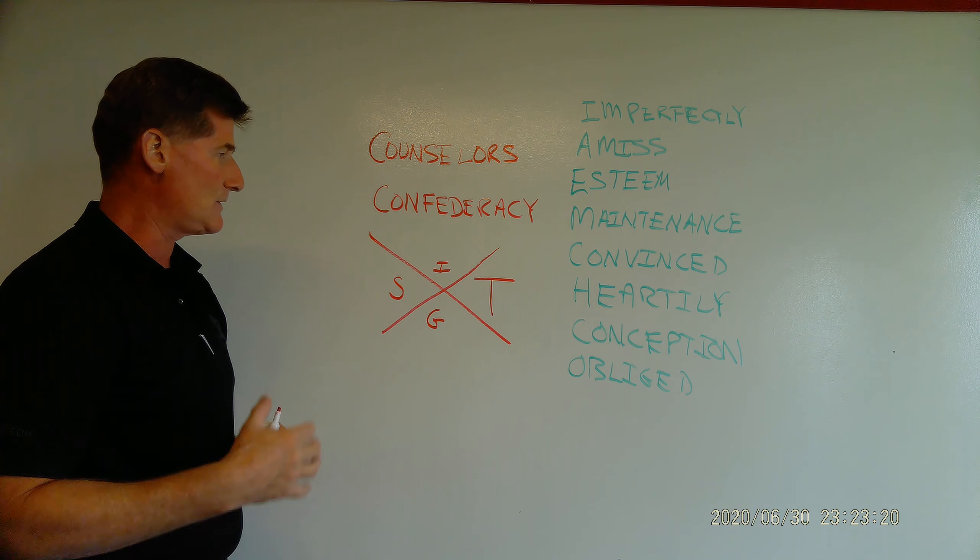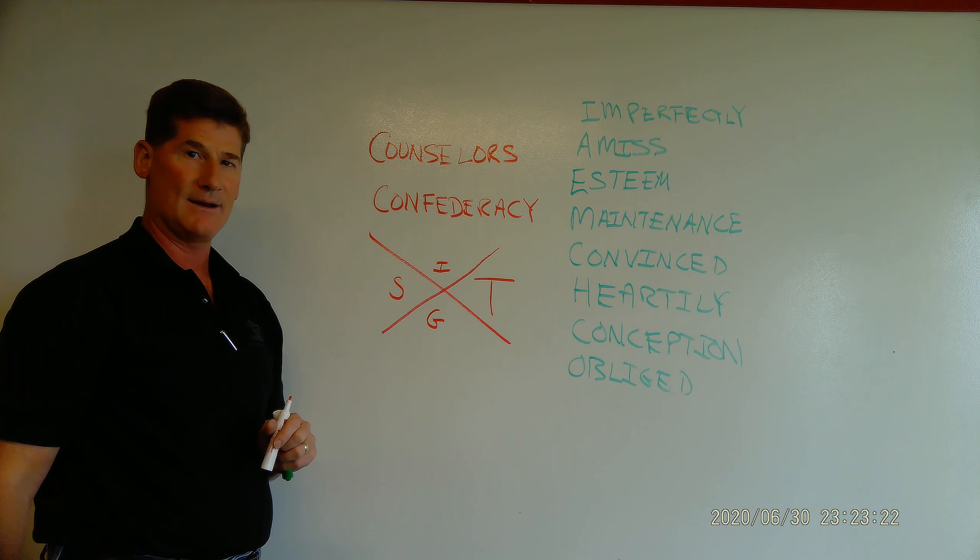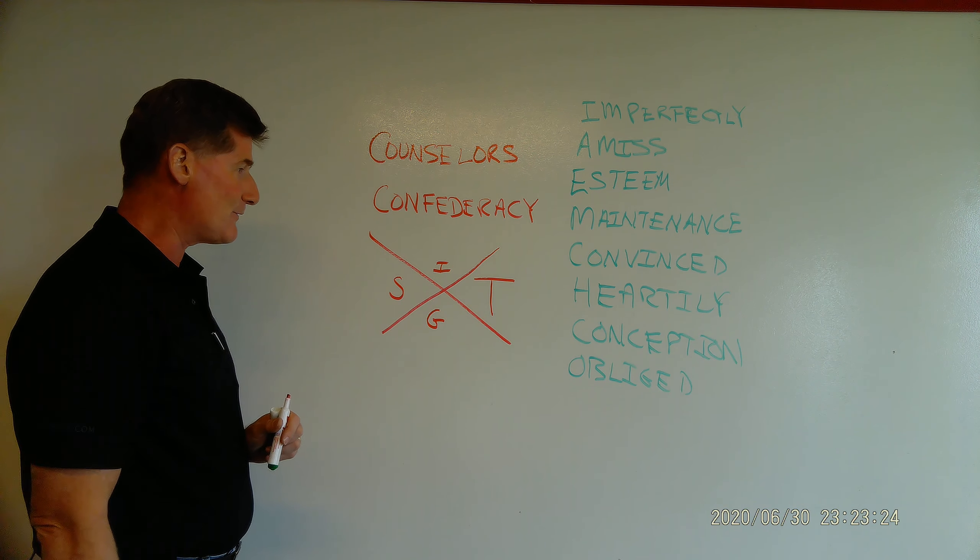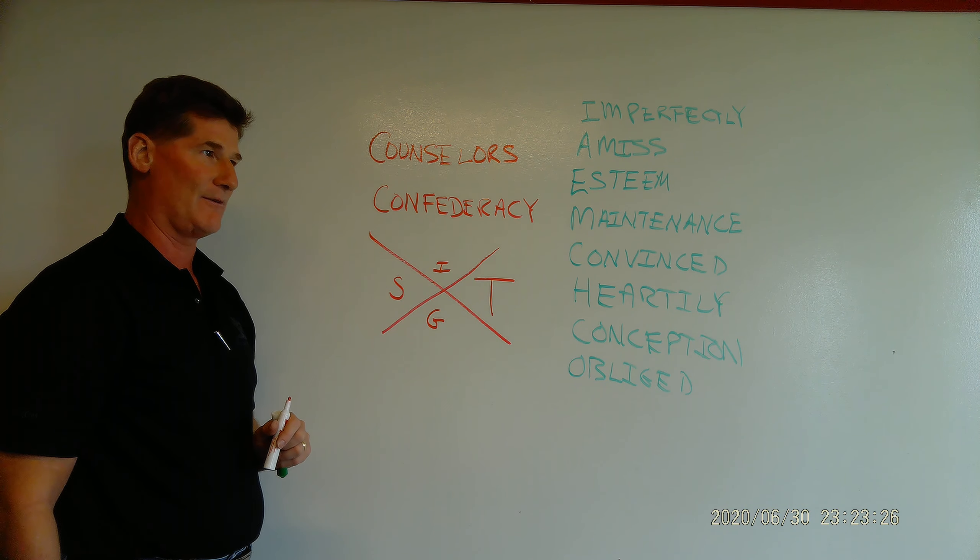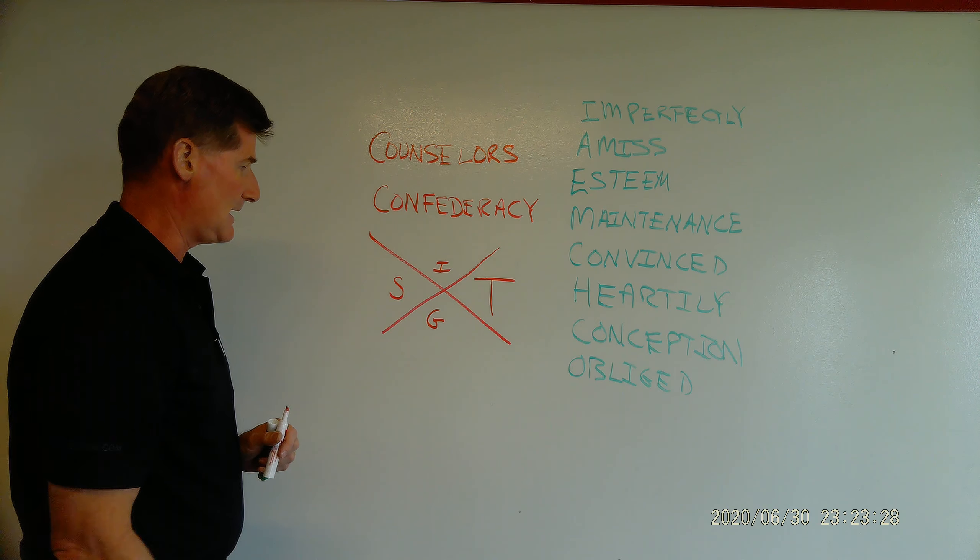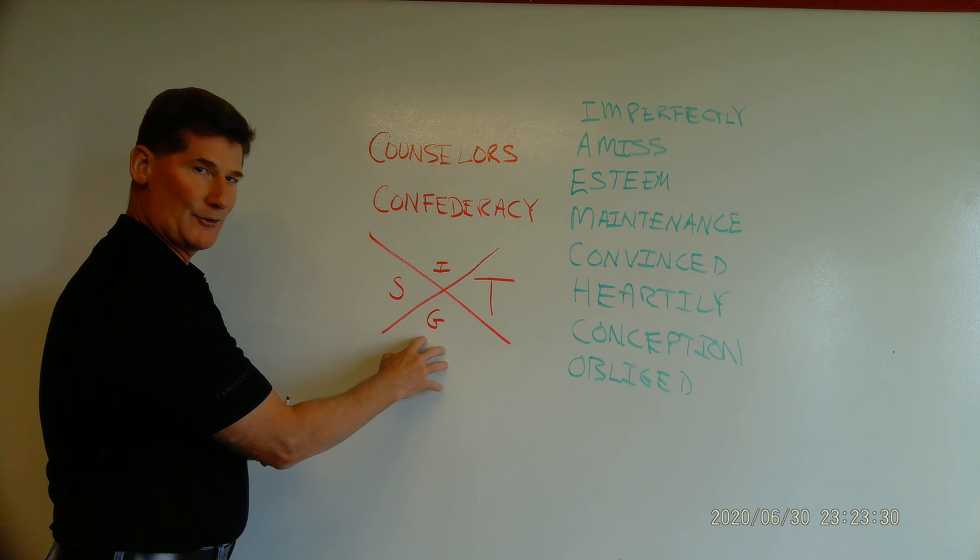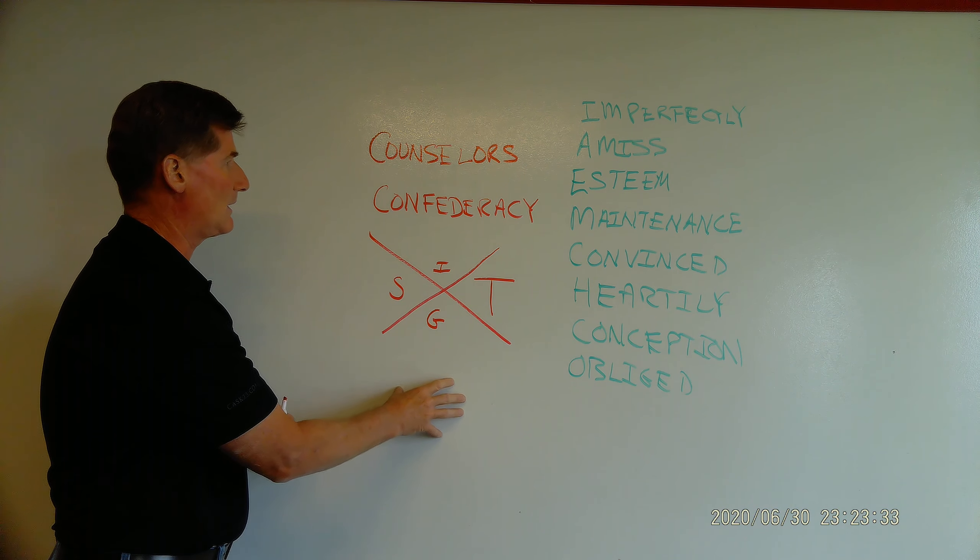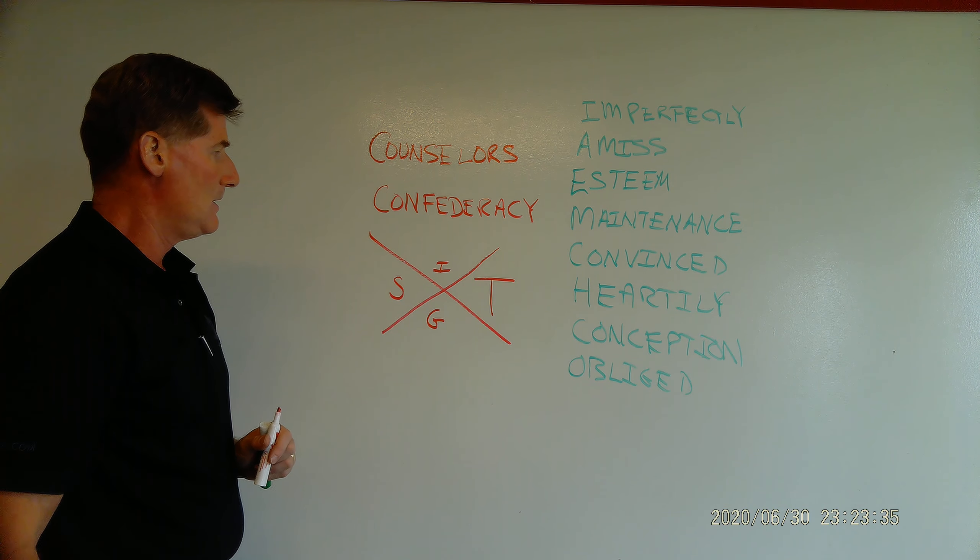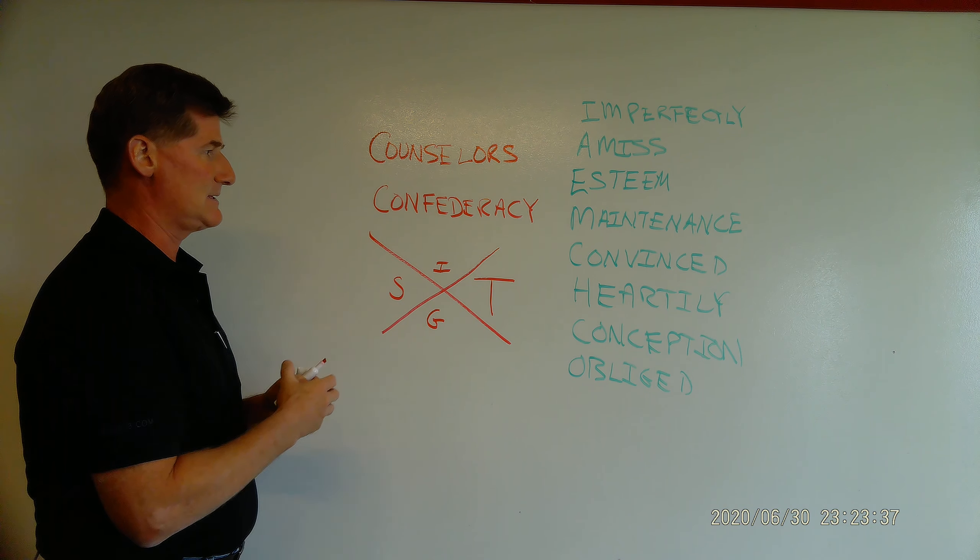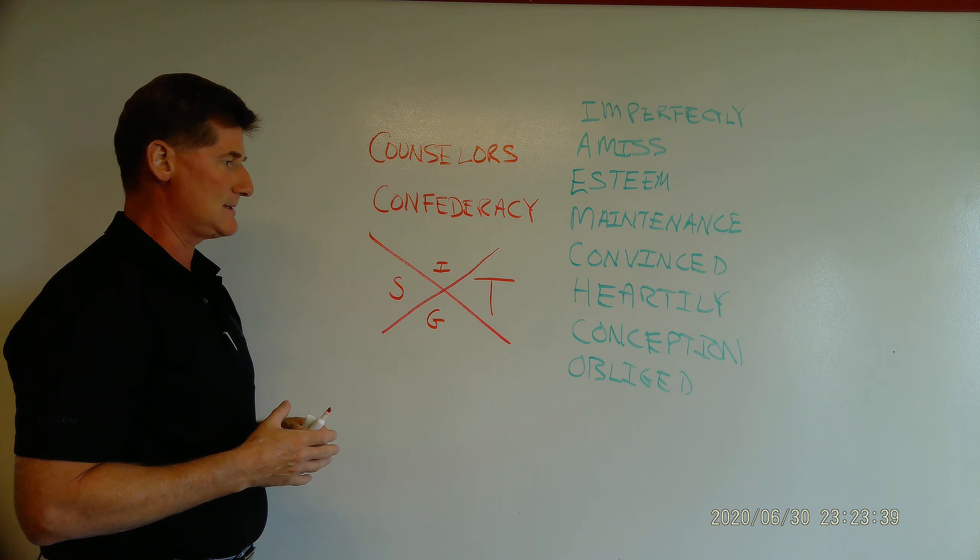which is of course very different. Before the revolution, the American Revolution didn't have this—the king was the source of government, and of course that didn't work either. So we're going to get into that later on. But this is the confederacy,